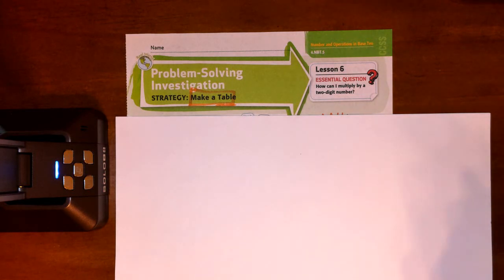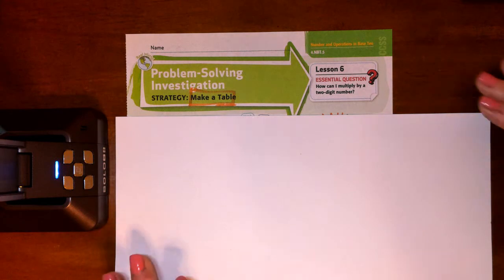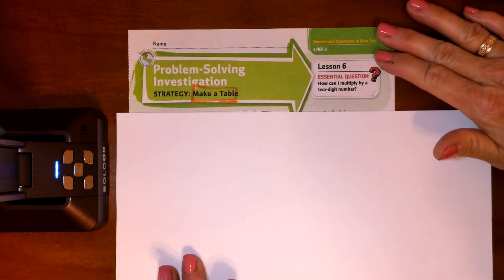The strategy that we're going to be learning today is to make a table. You can see that I've got my worksheet covered up. My dogs made a huge ruckus at the end of my video, so I had to trash that one. So I'm just going to talk you through it, even though it's already kind of finished.